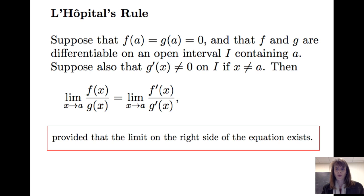This is provided that the limit on the right side of the equation exists, and this is an important qualification. We're going to look at an example where the limit on the right side does not exist, and what we do in that situation.